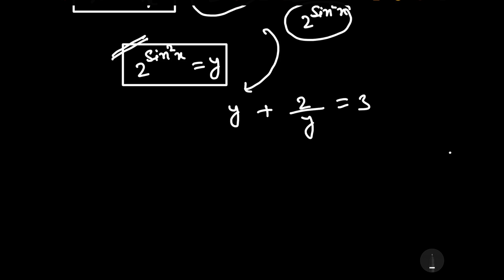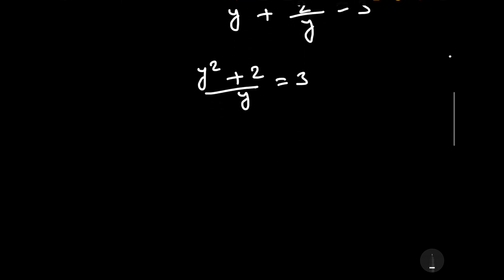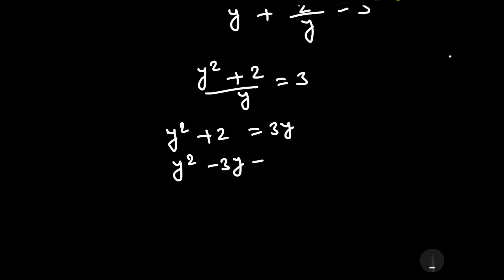Now let us solve this equation. Multiplying through by y, we get y² plus 2 upon y is equal to 3, which gives y² plus 2 equals 3y. This can be further written as y² minus 3y plus 2 is equal to 0.